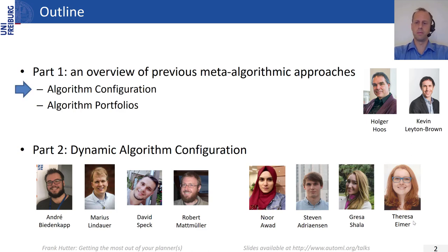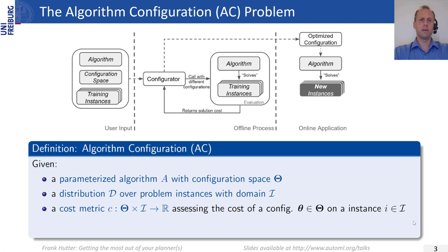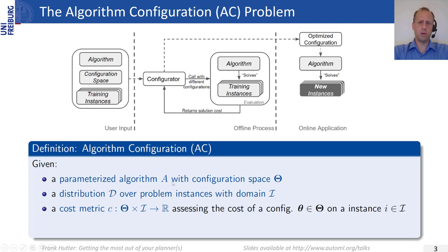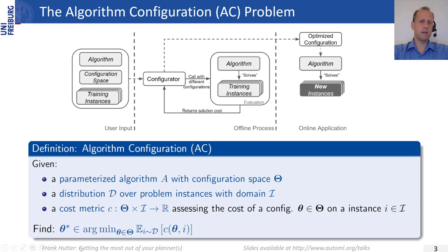The algorithm configuration problem is as follows. We are given an algorithm with a configuration space and some training instances, and we ask a configurator to find the best parameter setting on these training instances. More formally, we have a parameterized algorithm with configuration space theta, a distribution over problem instances with domain I, and a cost metric assessing the cost of a configuration theta run on an instance. We seek a theta that minimizes this cost metric in expectation over instances sampled from distribution D.